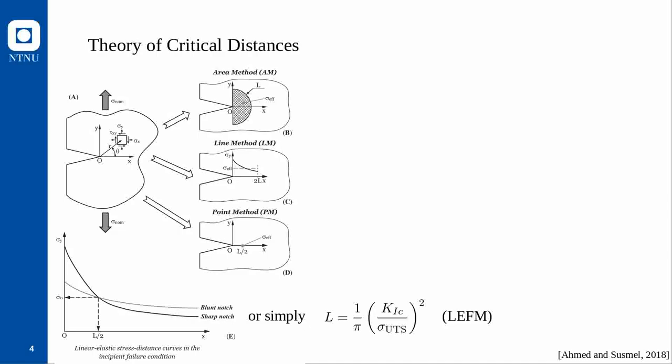For reasonably brittle materials, instead of using a blunt notch, one can use the infinitely blunt notch — the smooth specimen — replacing it with a horizontal line at the ultimate tensile strength. For very brittle materials, one can also use the formula which derives the length scale from the fracture toughness and ultimate tensile strength, based on linear elastic fracture mechanics. However, Ahmed and Susmel decided to use the robust calibration method for their data.